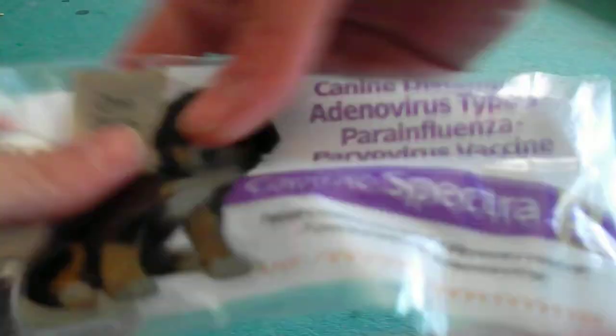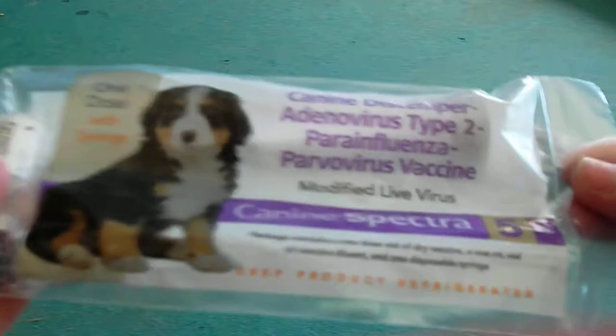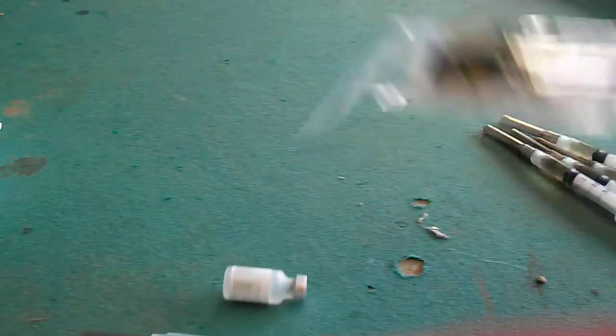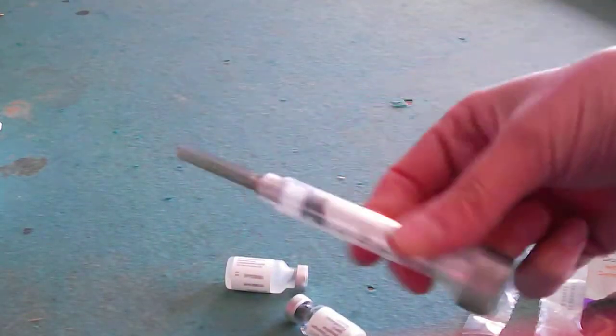How to prepare a vaccine. This is Kenan Inspector 5. It's a puppy shot. It comes with syringe and needle.